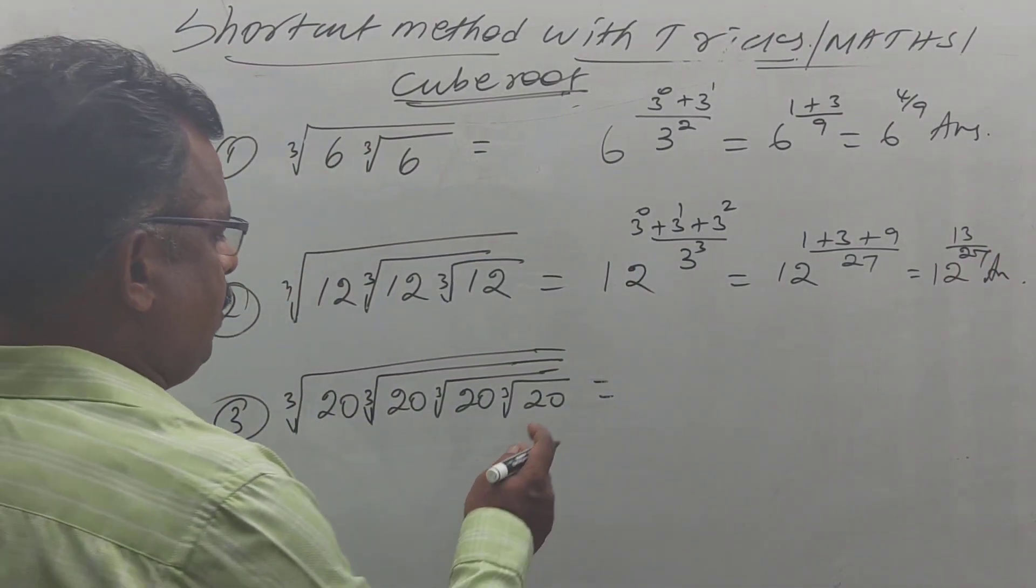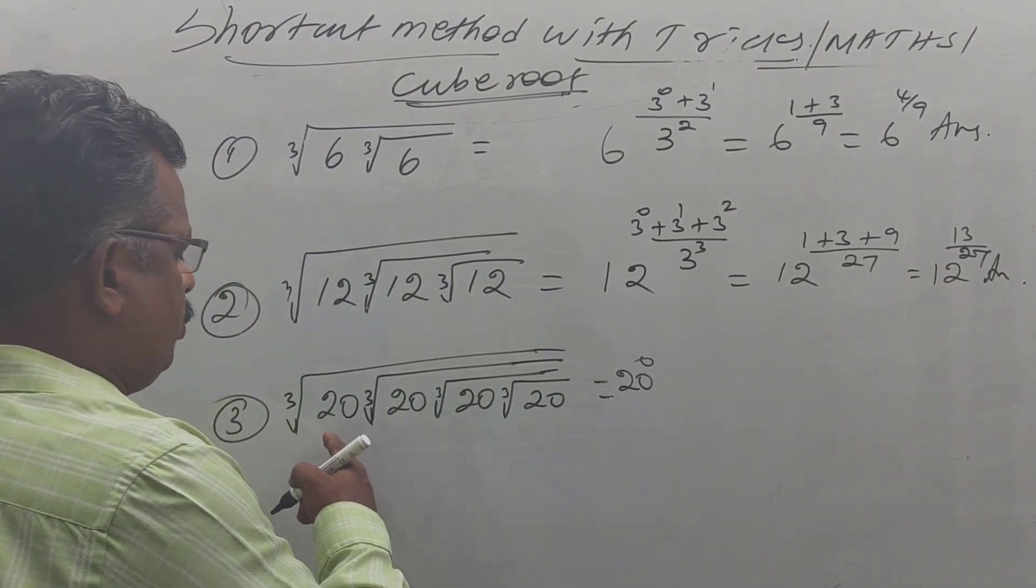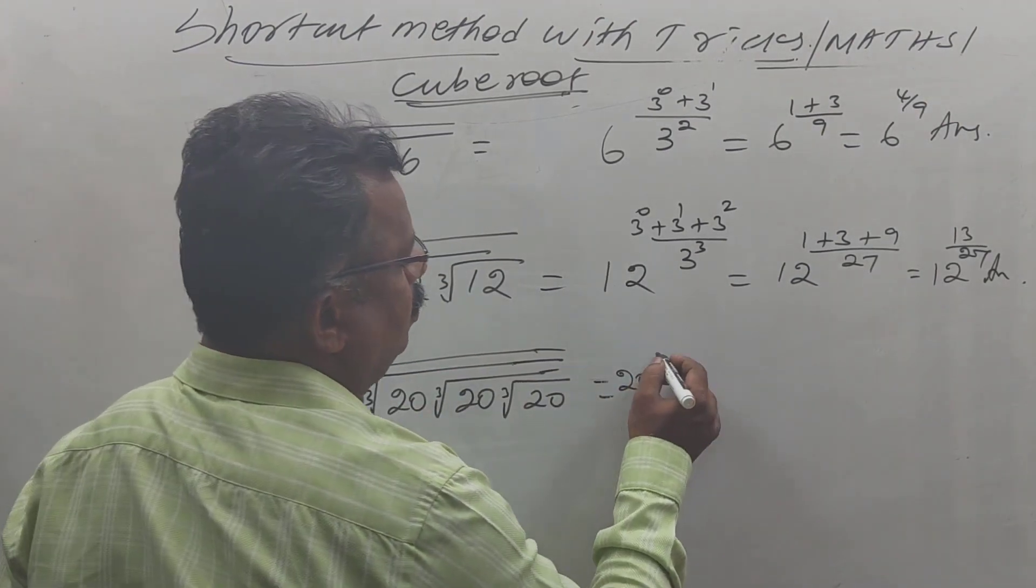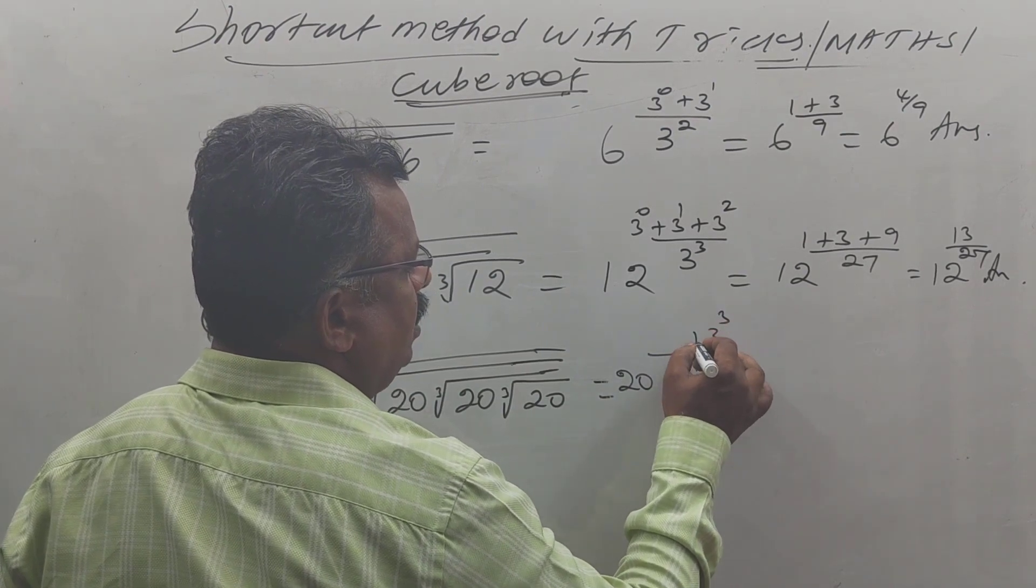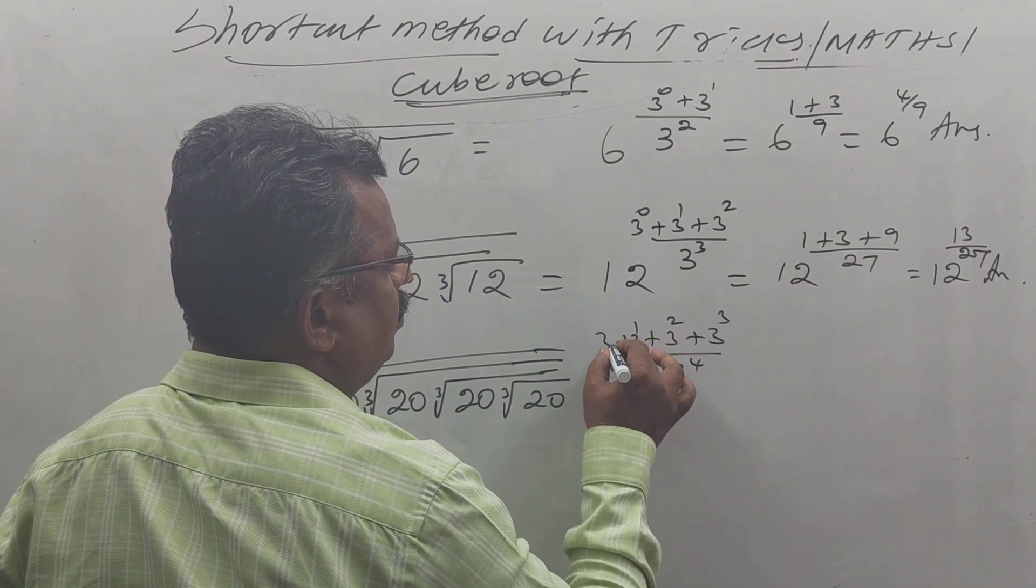Next time, 20. How many cube roots available? One, two, three, four cube roots available. So 3 power 4, 3 power 3, 3 power 2, 3 power 1, 3 power 0.